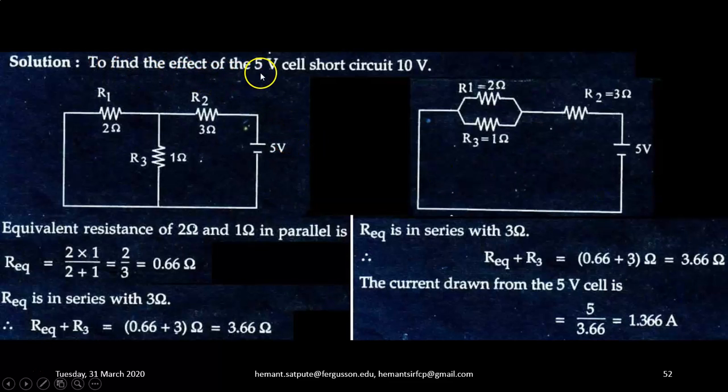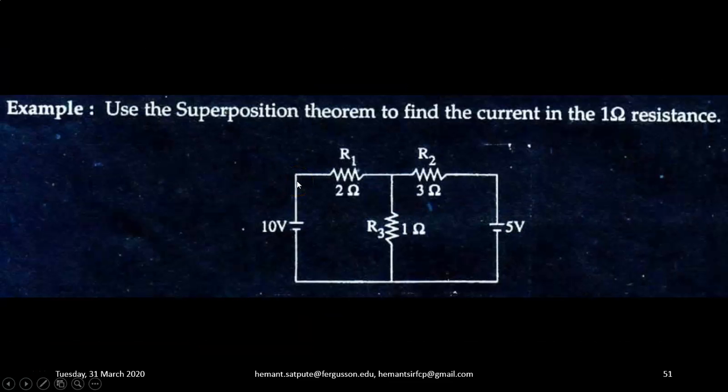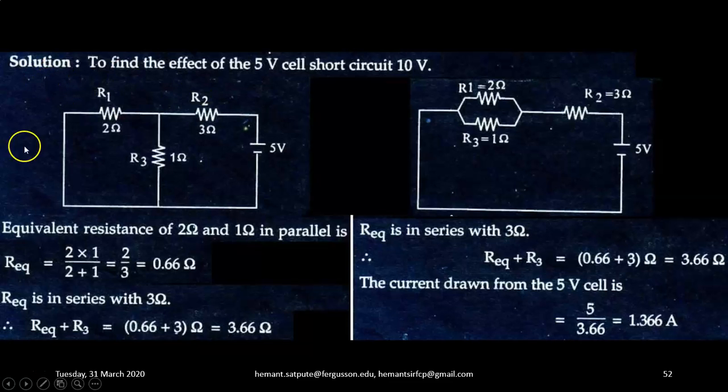To find the effect of the 5 volt cell, let us short circuit the 10 volt source. So the 10 volt voltage source on the left side, we are going to short that. So the circuit will look like this. Now in this circuit, there is only one source, 10 volt voltage source is short. So equivalent resistance of R1 and R3, they will come in parallel now. So 1 ohm and 2 ohm will be in parallel. That equivalent resistance will be 2 into 1 upon 2 plus 1, that is 2 by 3, that is 0.66 ohms.